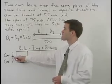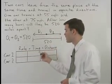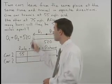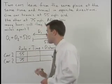The rate for the first car is 55 miles per hour. The rate for the second car is 75 miles per hour.